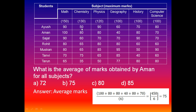There are seven students who get different marks in these subjects. Our first question is: what is the average marks obtained by Aman for all subjects? Aman gets 100 in Math, 80 in Chemistry, 80 in Physics, 40 in Geography, 80 in History, and 70 in Computers. We add all of them: 100 plus 80 plus 80 plus 40 plus 80 plus 70.